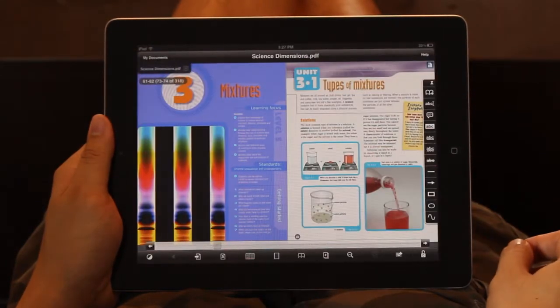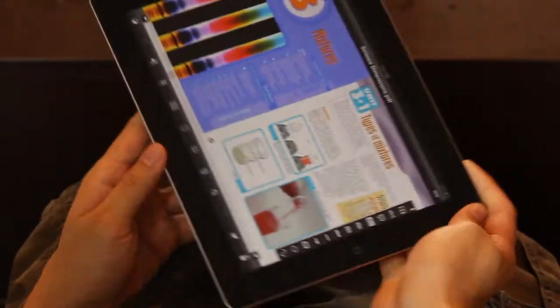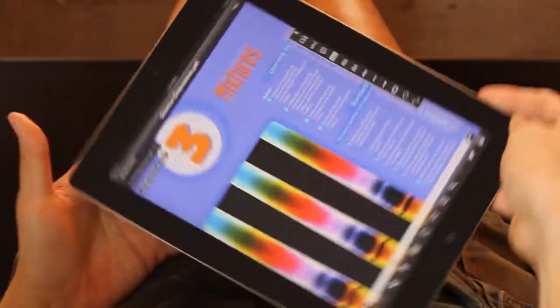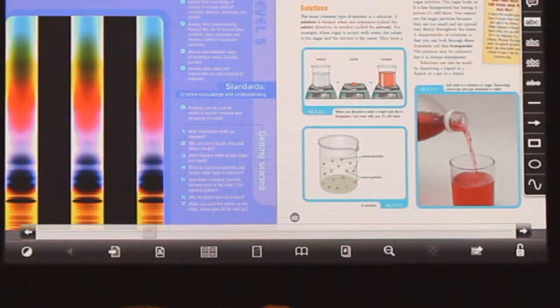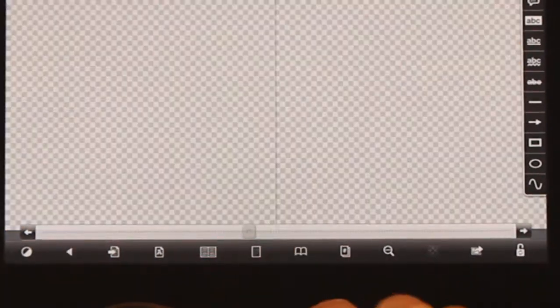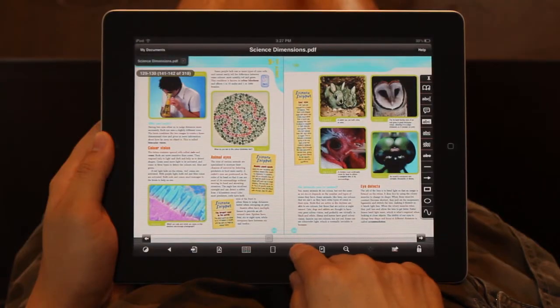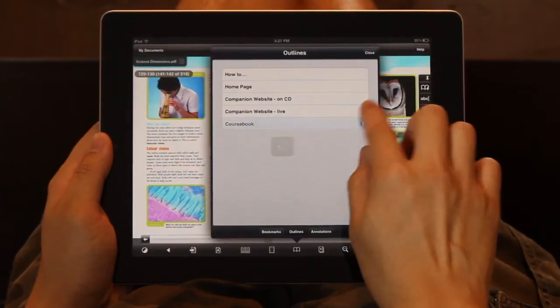Looking at your textbook with Goodreader is easy and natural. You can read in portrait or in landscape, jump to any page using the scroll bar at the bottom, and access the contents page at any time.